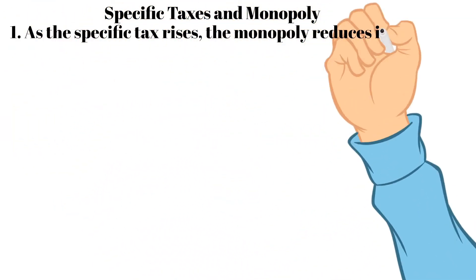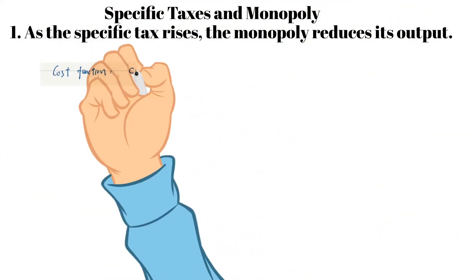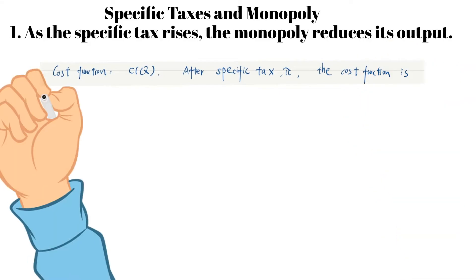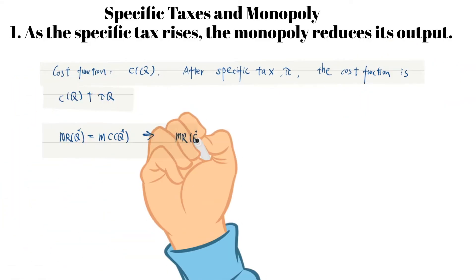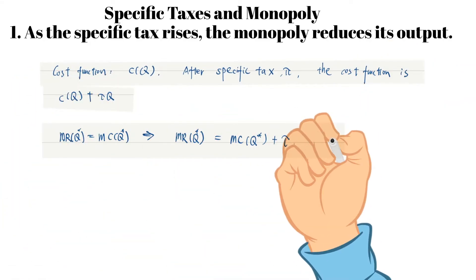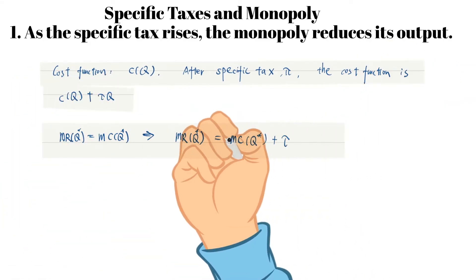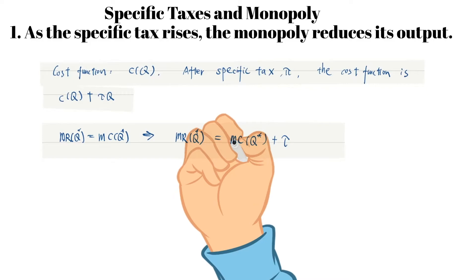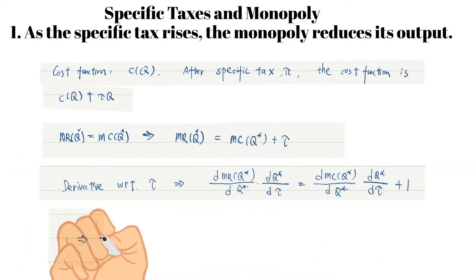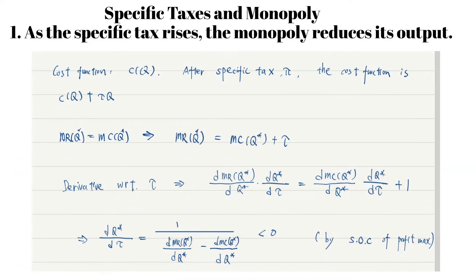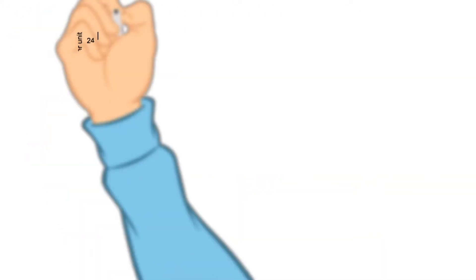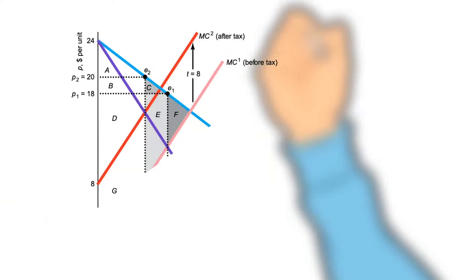It can be proved that a monopoly will lower its output and increase its price when the government imposes a specific tax, and the deadweight loss will also increase.